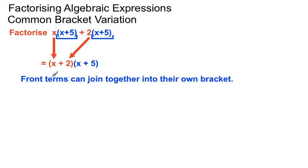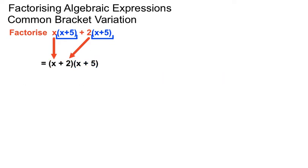If you're given an arrangement whereby you've got common items in the bracket, those front bits can join up in their own bracket and we just list the second bracket once. We'll look at another example.